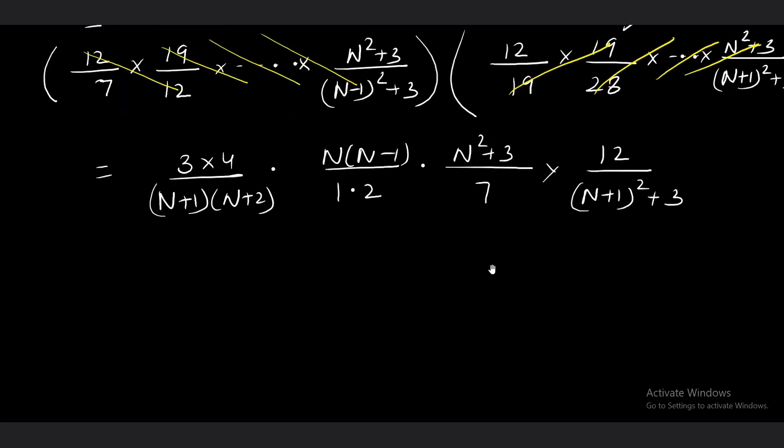For infinite terms, I am going to put limit n tends to infinity in this product. This becomes 12, which is 6. This is 72/7. Then we have n(n - 1)(n² + 3) in the numerator.